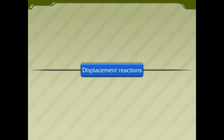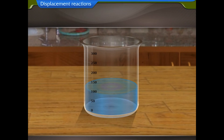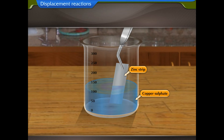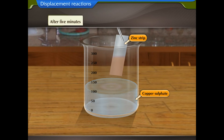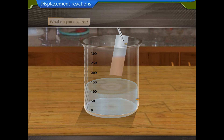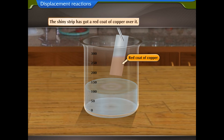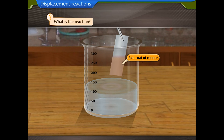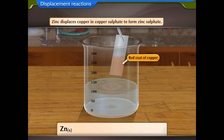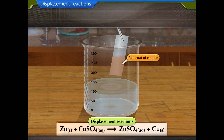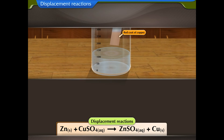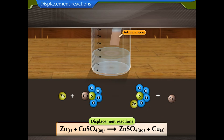Displacement reactions: take a solution of copper sulfate in a beaker and dip a zinc strip in the solution. Remove the strip after five minutes — the shiny strip has a red coat of copper over it, and the copper sulfate solution has become lighter in color. Zinc displaces copper in copper sulfate to form zinc sulfate. Such reactions are called displacement reactions: the more reactive element displaces the less reactive element from its compound.